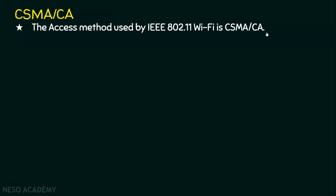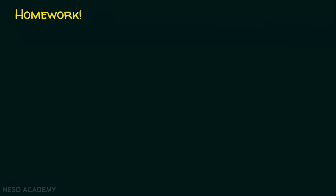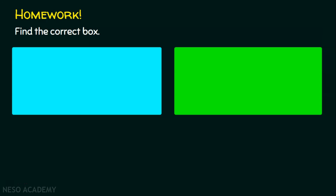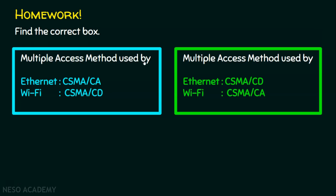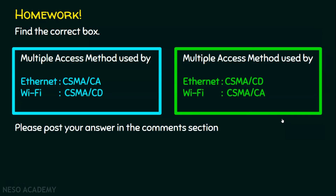We are done with CSMA/CD and CSMA/CA. Before we conclude, let's see the homework question: find the correct box. Two boxes are given — a blue box and a green box. The blue box states the multiple access method used by Ethernet is CSMA/CA and Wi-Fi is CSMA/CD, whereas the green box states Ethernet uses CSMA/CD and Wi-Fi uses CSMA/CA. Pause the video, think of the answer, and post your answer in the comment section.